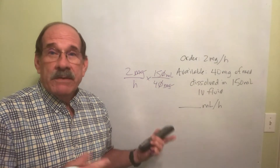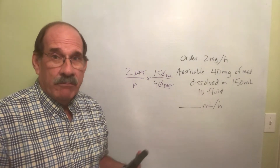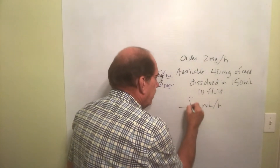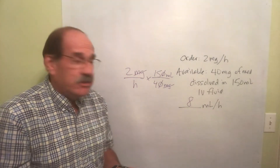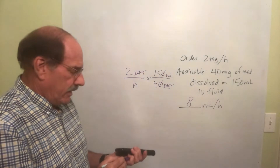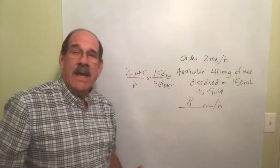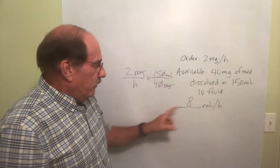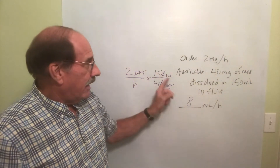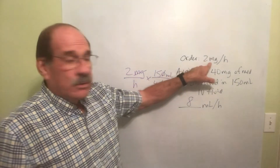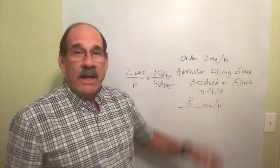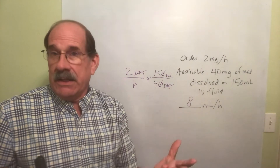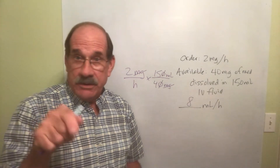The answer is 7.5. It's an IV problem, so always round to the nearest whole number — 7.5 rounds up to eight. I'm going to give that patient eight milliliters per hour, and when the pump is dripping at this rate, I'm delivering those two milligrams every hour to the patient.